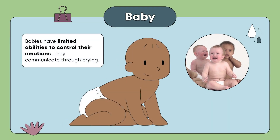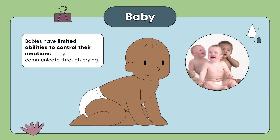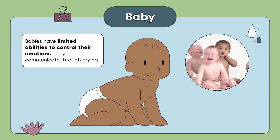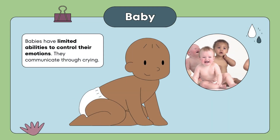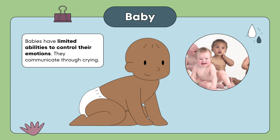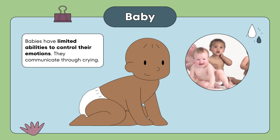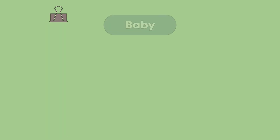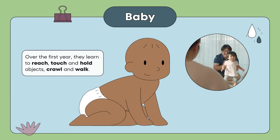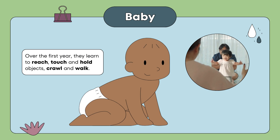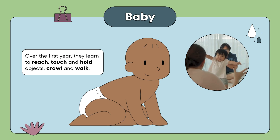Babies have limited abilities to control their emotions. They communicate through crying. Over the years, they learn to reach, touch, hold objects, crawl, and walk.